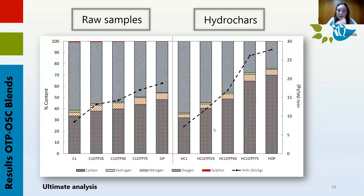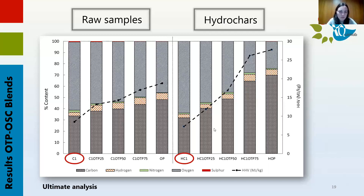The ultimate analysis along with the higher heating values shows that raw samples increase their carbon concentration when olive tree pruning content is higher in the blend. For the hydrochar the same is true, but more pronounced. It is interesting to note that the hydrochar obtained from the compost alone exhibits worse results than the raw material. Therefore, we can conclude that it is the olive pruning component that allows for the improvement in carbon content and consequently in higher heating value.